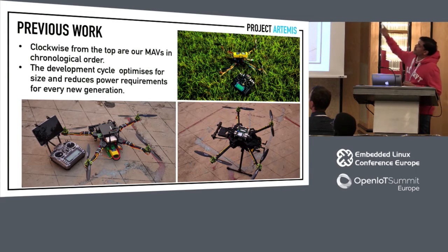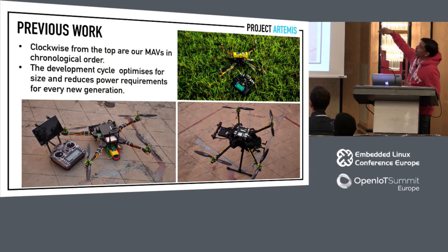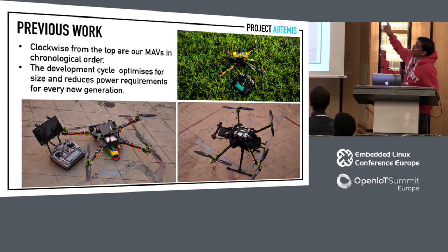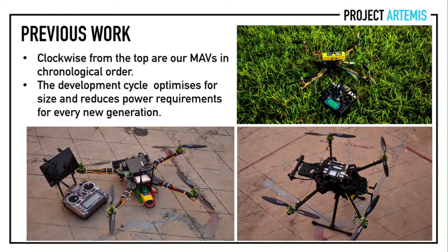These are some of our previous vehicles. Clockwise: the one on top is MAV-1, which used monocular visual odometry and also served as a test bed for optical flow. MAV-2 used stereo cameras, and MAV-3 also used stereo cameras but with inertial assistance.